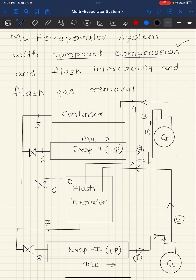Compound compression means that the compression is done in two or more stages. Generally, when you are compressing the refrigerant in two or more stages, we employ intercooling. In this case, we would be considering the special case where the intercooling is done by using a flash chamber — it is called flash intercooling.